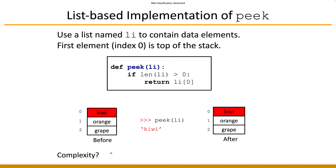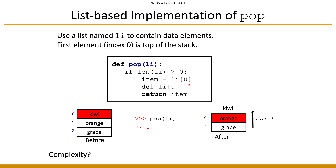The peek operation is very simple: double-check that the list is not empty, and if it isn't, return the very first element. The final operation, pop, requires removing the element at index zero and shifting everything back — essentially a deletion of the first element. One potential implementation: check whether the content is non-empty; if so, get the first element, delete index zero, then return the element obtained.